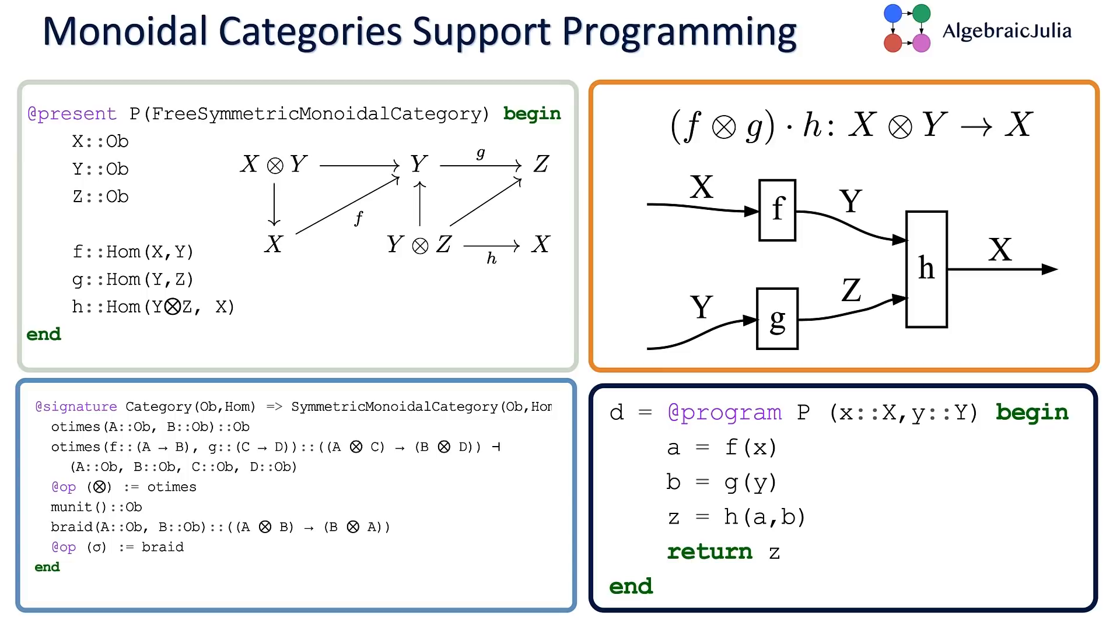We present a finitely presented symmetric monoidal category by writing down a list of objects and a list of HOMs, along with their domains and codomains. Once we've generated this category by providing a presentation, we can build expressions. Expressions in a symmetric monoidal category are generated by the primitive morphisms you declared, the O times like a Cartesian product, and then composition, which we represent with a dot. This morphism here F times G composed with H is going to be a map from pairs XY into X.